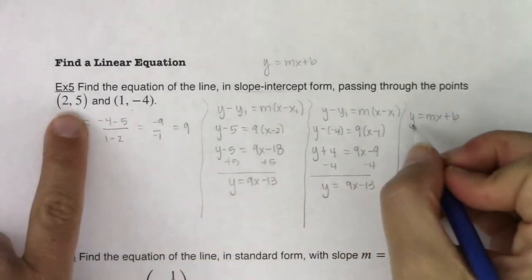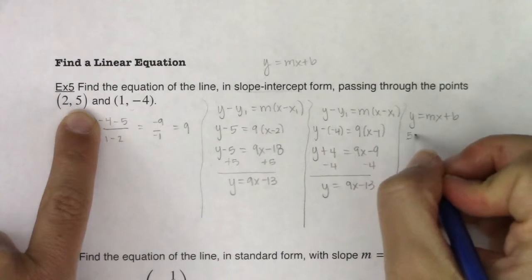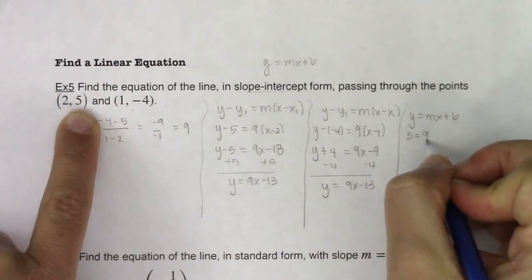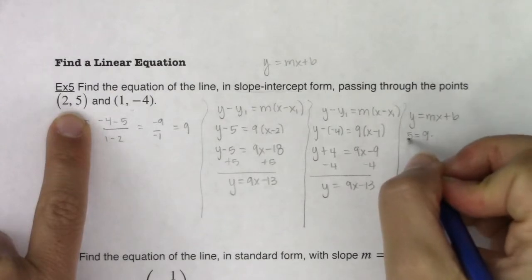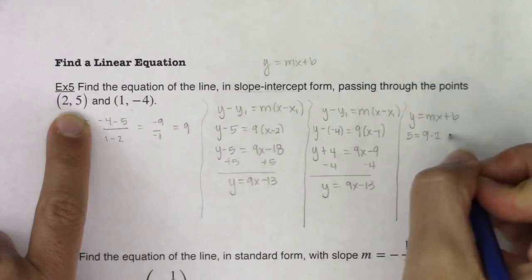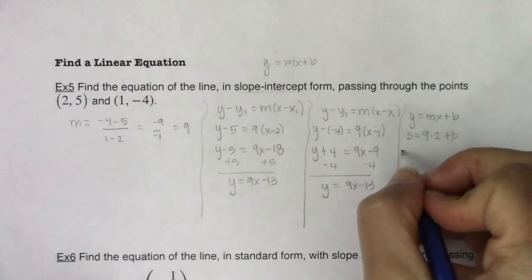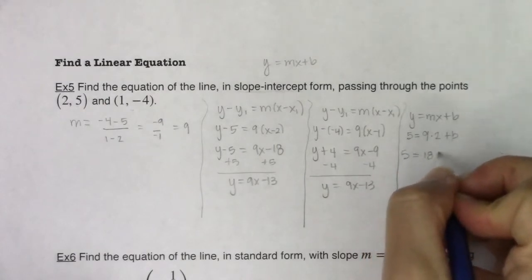So let's take (2, 5). I know the y value is 5. I know the slope value is 9. I know the x value is 2. And this will allow me to solve for b. So I would get 5 here equaling 18 plus b. I would subtract 18 from both sides. And I would get b = -13.